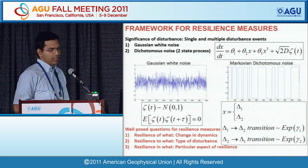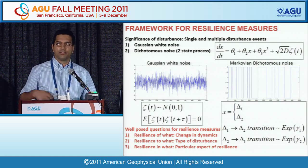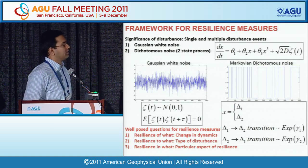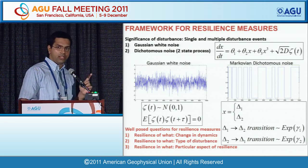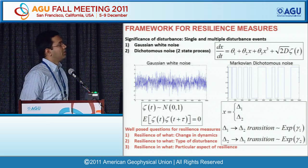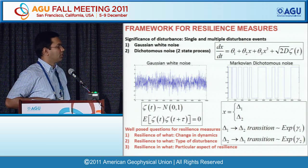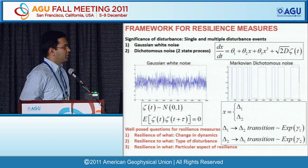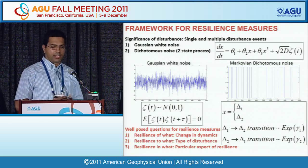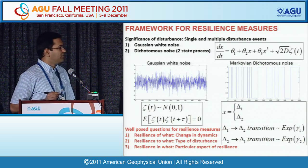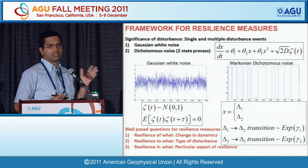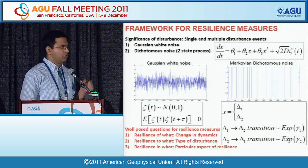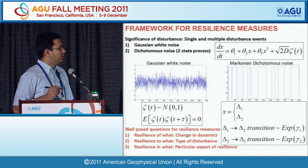This is the framework I use. You need some kind of disturbance event to talk about these things — if you have a steady state, nothing moves. You can either have a single disturbance event, or a series of disturbance events modeled as noise. Here I consider two types of noise: Gaussian white noise, which is non-correlated, and dichotomous noise, which is a two-state process where transitions between states are exponentially distributed. The key to formulating a resilience measure is to develop well-posed questions. Three questions help focus the framework: resilience of what? Resilience to what? And resilience in what aspect?